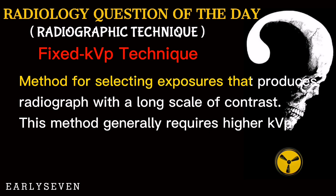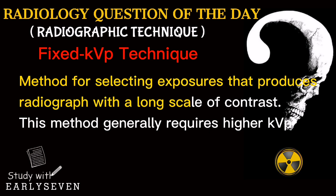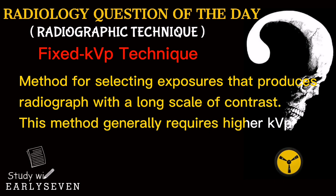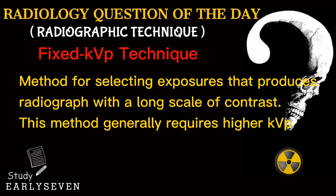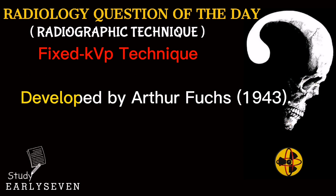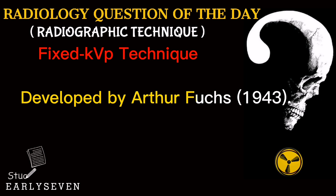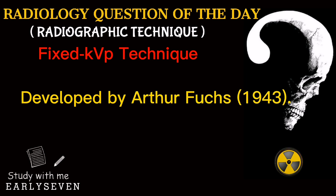It is also a method for selecting exposures that produces a radiograph with a long scale of contrast. This method generally requires a higher KVP. Fixed KVP technique was developed by Arthur Fox in the year 1943.